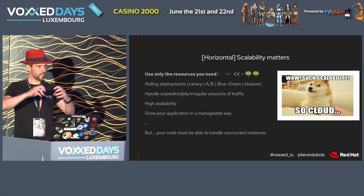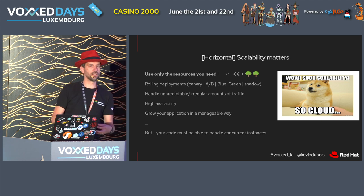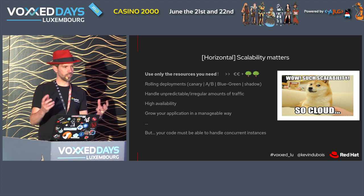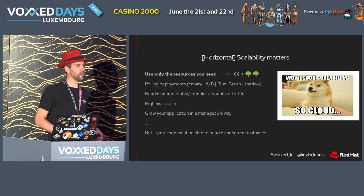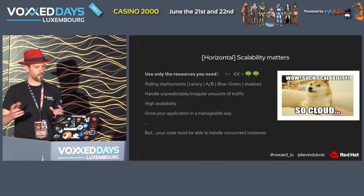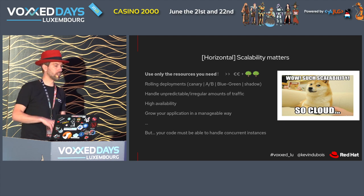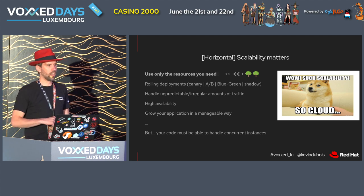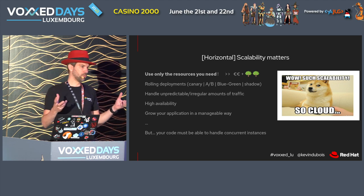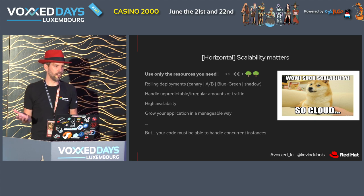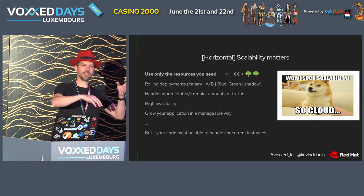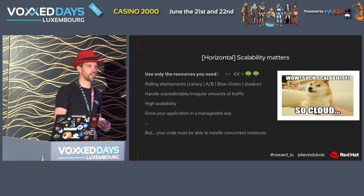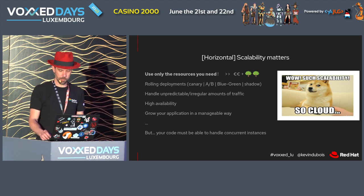Overall, if we can scale in a manageable way, we can grow our applications organically without worrying too much about handling more and more interest. One thing to be mindful of with horizontal scalability: when multiple instances of the same code run simultaneously, we need to make sure our code can handle it. We don't want multiple instances hitting the same database doing the same operations, causing conflicts or race conditions.